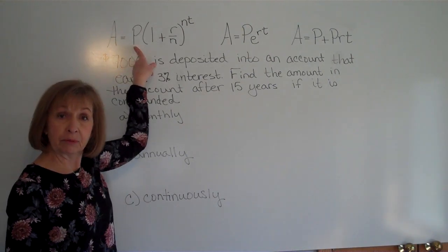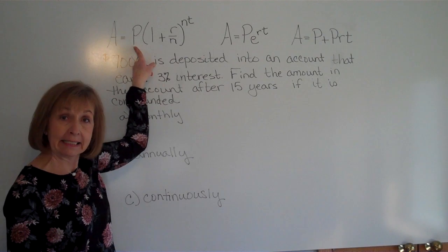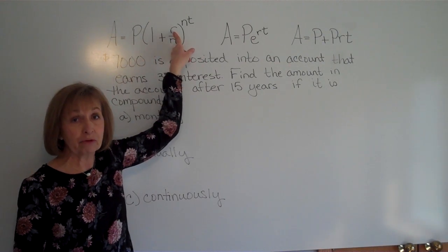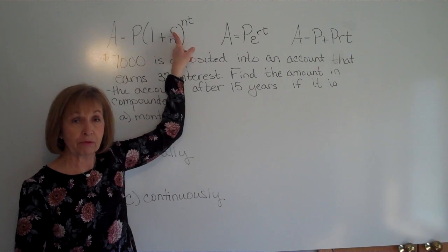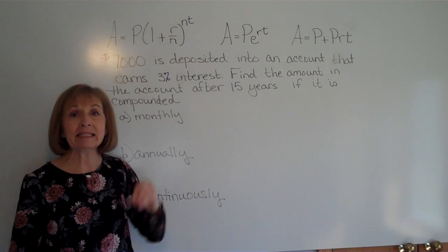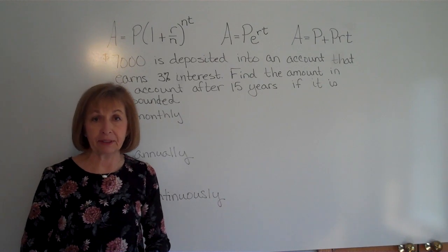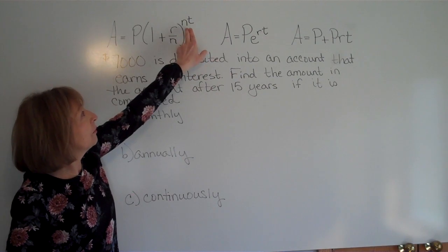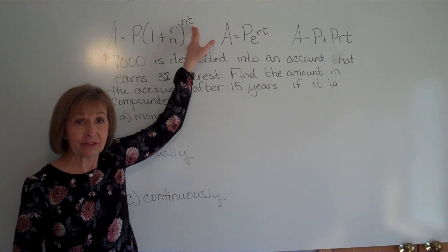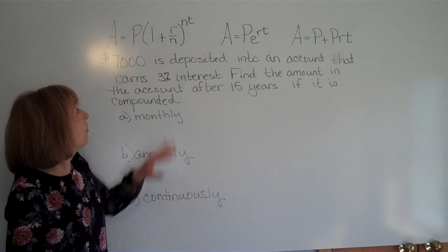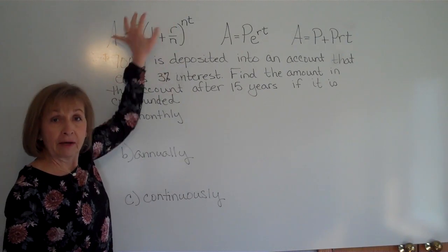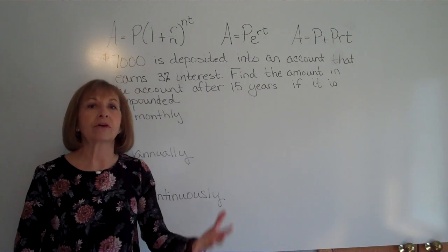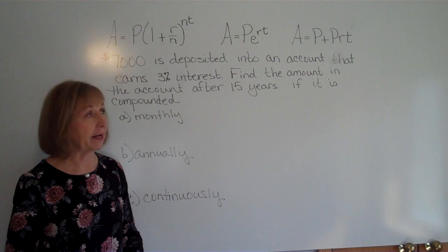P is the principal — the amount you deposit into the account. R is the interest rate in decimal form, so we convert from percent to decimal. N is the number of compounding periods per year, and T is the time in years. A is the amount in the account after that time period.